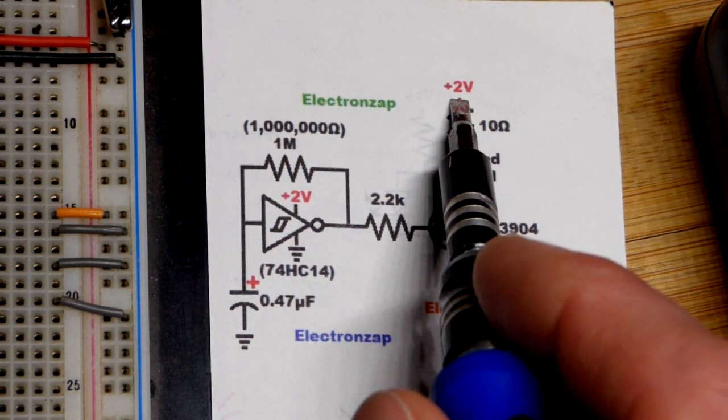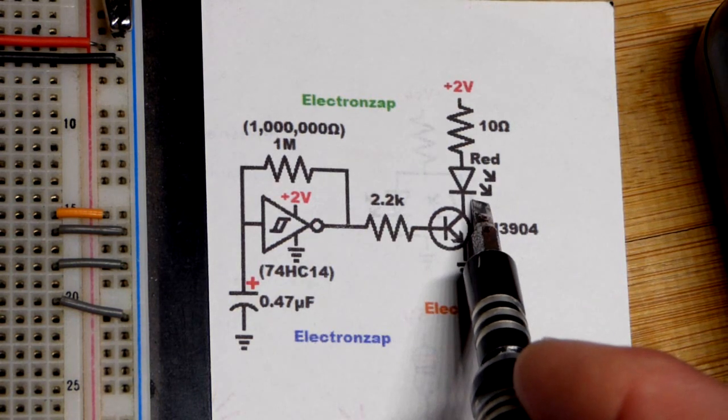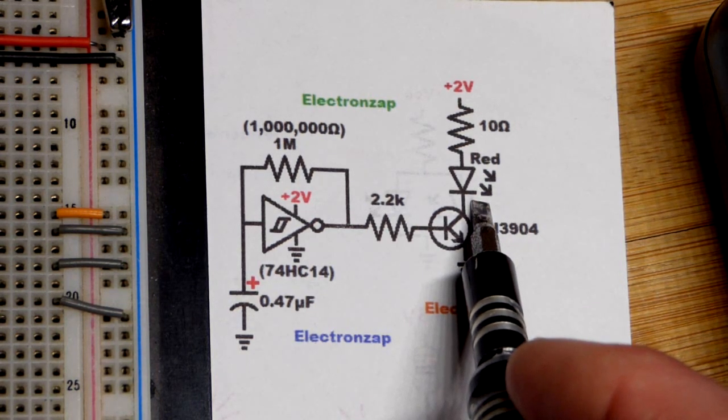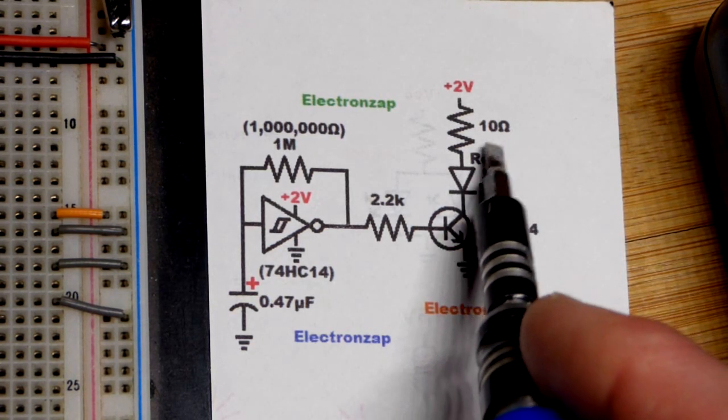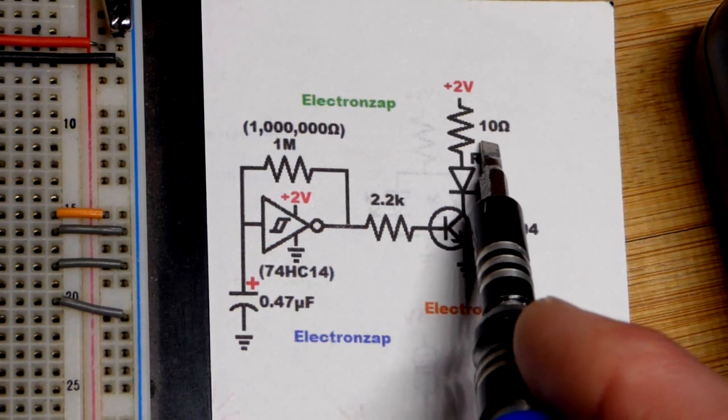Now, we are only working with 2 volts total. That's about what it takes to get a red LED to light up. And the red LED will build up a little bit more voltage across it. So technically, we could probably get rid of this resistor.